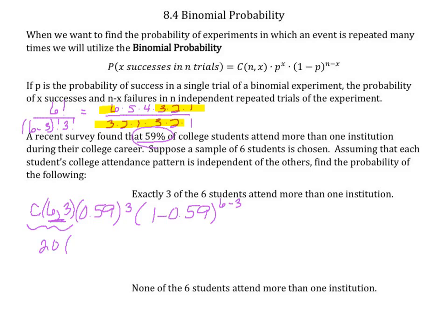If I take 0.59 and cube it using my calculator, we get 0.205379. And we'll have one minus 0.59, which is 0.41 to the third power. Multiplying all of these numbers together we get 0.2831 rounded, meaning there's a 28% chance that three of the six students will attend more than one institution.